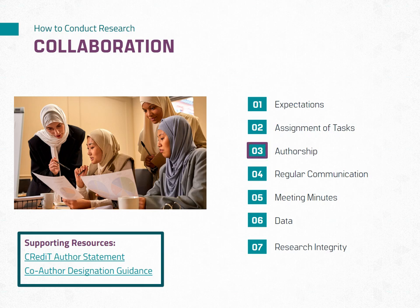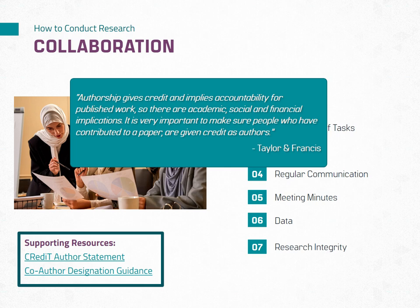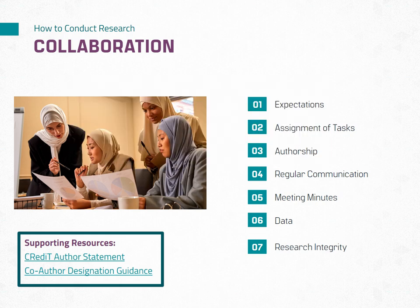Publication is a necessary part of research. It allows researchers to share ideas and results and help other researchers expand the body of knowledge in various topics. The publisher Taylor & Francis states that, quote, authorship gives credit and implies accountability for published work, so there are academic, social, and financial implications. It is very important to make sure people who have contributed to a paper are given credit as authors. Close quote. The difference between authorship and acknowledgement is based on the level of effort and contribution. In a collaborative group, authorship may also involve you being the co-author and the collaborator writing a first author paper. Click the links in the supporting resources section of this slide to review the co-author guidance and an explanation of a credit author statement.